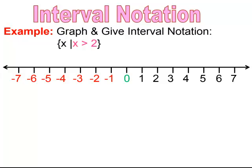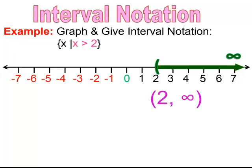In this last example, we have a set-building notation where x is greater than 2. Because it's not equal to 2, it's just greater than, we're going to have an open parentheses, open in the direction we're shading, and it's going off to positive infinity. So the interval notation is parentheses 2 comma positive infinity end parentheses — parentheses because it's not including 2, and it's going off indefinitely in the positive direction.